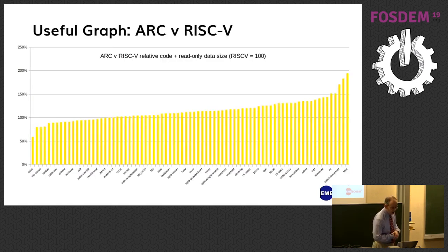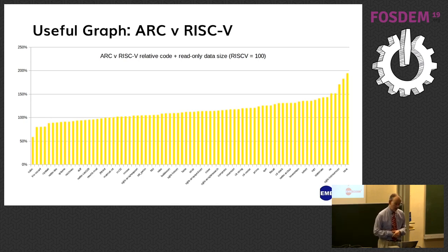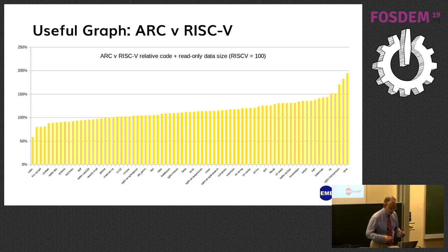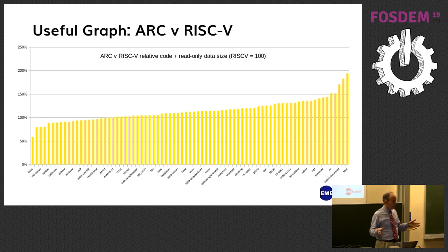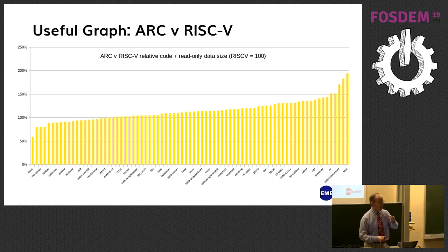What comes out of this is some useful graphs. You can compare ARC against RISC-V by relative size and order them. The interesting ones are at each end — for example, cubic, where ARC is nearly twice as good as RISC-V, or the one at the other end where ARC is almost twice as bad. Those are the ones we're going to delve into, because why is GCC so different for those programs? At one end, ARC is doing really well and RISC-V isn't; at the other end, the reverse. This is good for both the ARC and the RISC-V compiler teams.